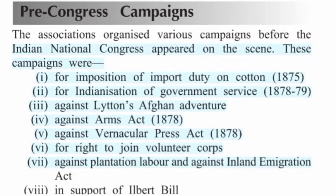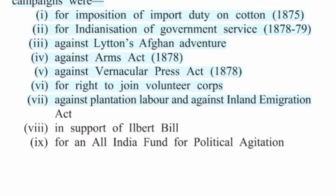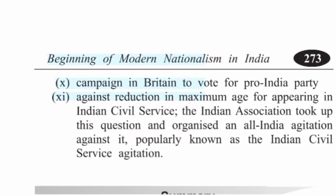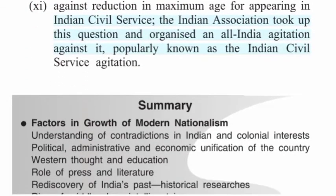Pre-Congress Campaigns: The associations organized various campaigns before the Indian National Congress appeared on the scene. These included: campaign for imposition of import duty on cotton (1875); for Indianization of government service (1878–79); against Lytton's Afghan adventure; against the Arms Act (1878); against the Vernacular Press Act (1878); for the right to join volunteer corps; against plantation labor and the Inland Emigration Act; in support of the Ilbert Bill; for an all-India fund for political agitation; campaign in Britain to vote for pro-India candidates; and against the reduction in maximum age for appearing in the Indian Civil Service examination.